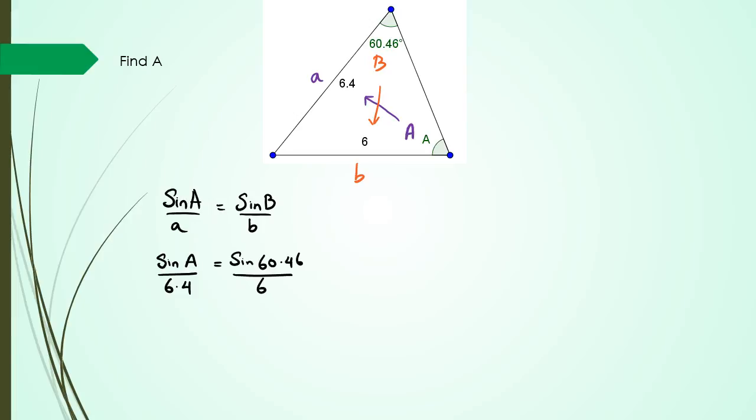And little b is 6. So rearranging this, I'm going to have sine A equals 6.4 times sine 60.46 divided by 6.